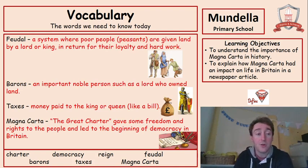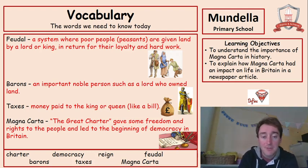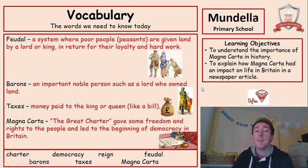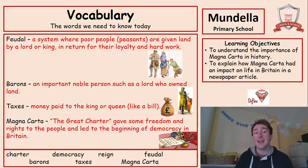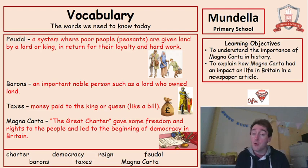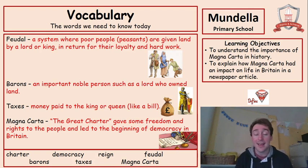Here are our other four words. Feudal — people working in a feudal system means poor people or peasants are given land by a lord or a king in return for their loyalty and hard work. The lord or king who owns the land gives a very small piece to a peasant, who then has to work on the land, grow food and crops, and pay taxes. That's the only way they could live. It was a tough life back then for a peasant.